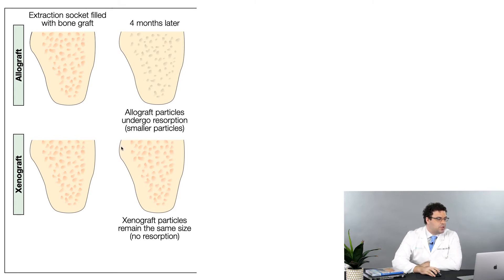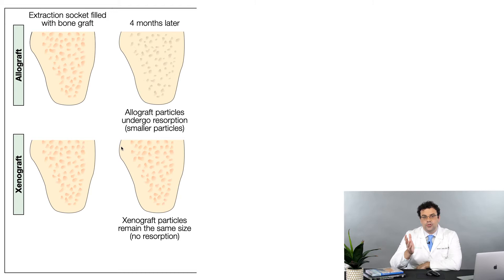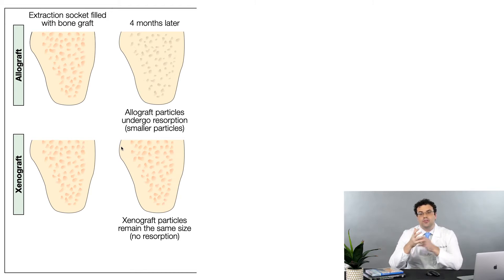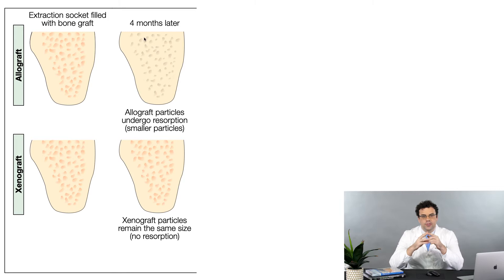The key difference between the two is that allografts are resorbable, while xenografts are typically non-resorbable. Bio-Oss is the perfect example. The xenograft is called deproteinized bovine bone mineral because it's deproteinized — no proteins, no growth factors.